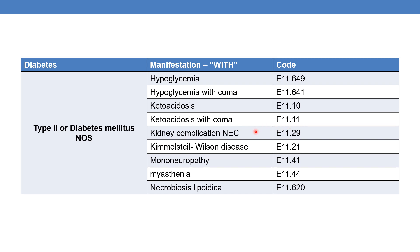For kidney complication NEC — not elsewhere classifiable — the code is E11.29. For diabetes mellitus with Kimmelstiel-Wilson disease, the code is E11.21. For diabetes mellitus NOS with mononeuropathy, the code is E11.41. For diabetes mellitus with myasthenia, the code is E11.44.